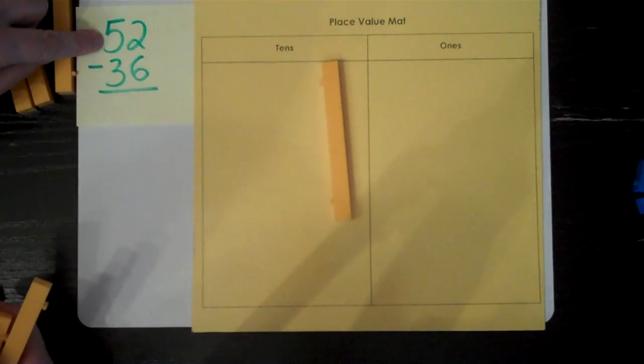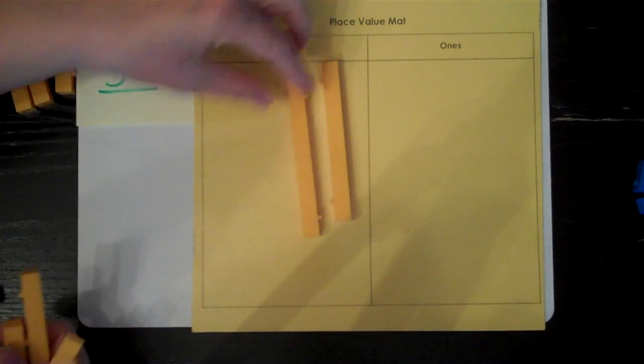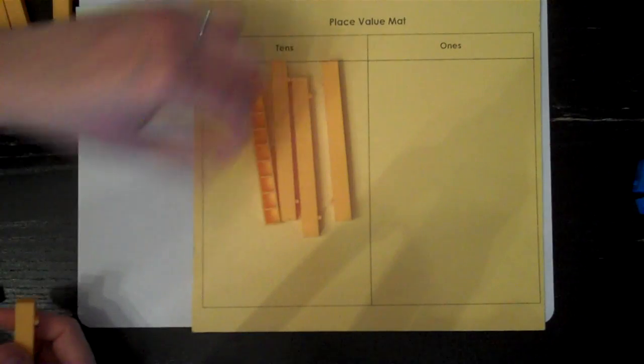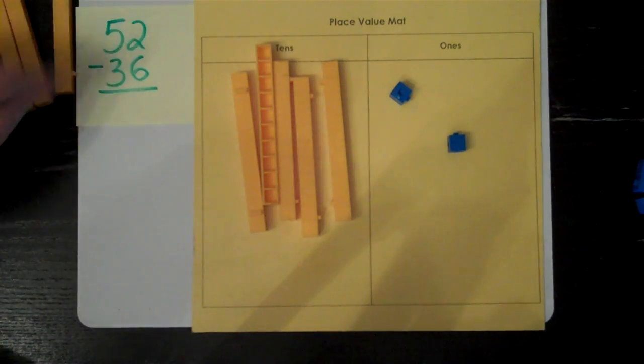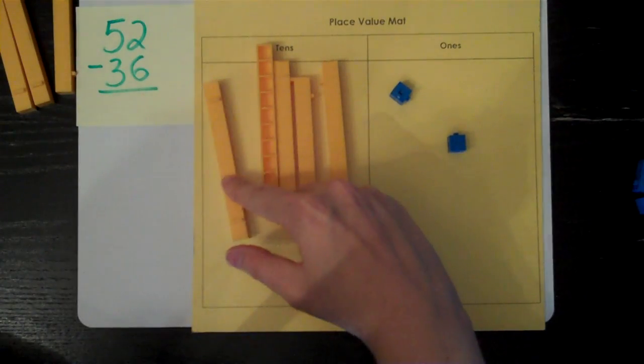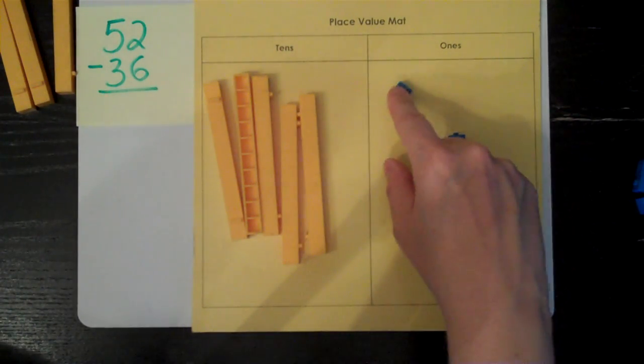And that has five tens. One, two, three, four, five. And two ones. One, two. I'm going to double check I made it correctly. Ten, twenty, thirty, forty, fifty. Fifty-one, fifty-two.